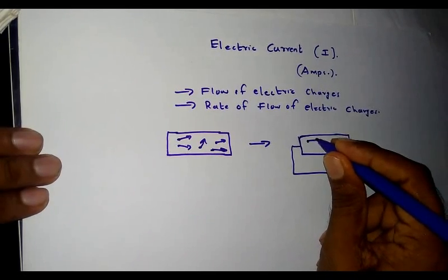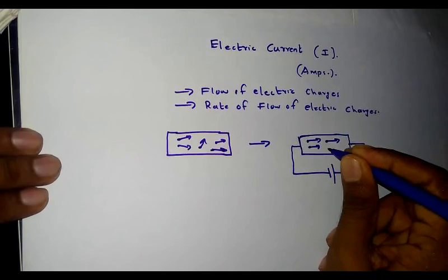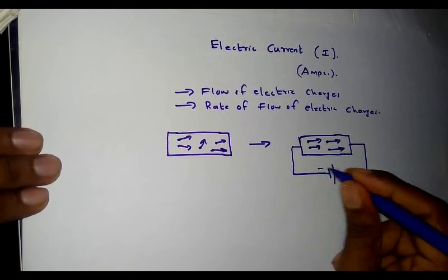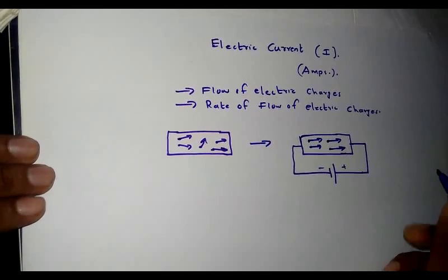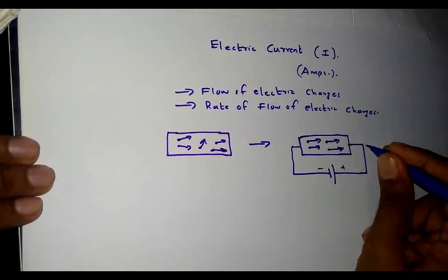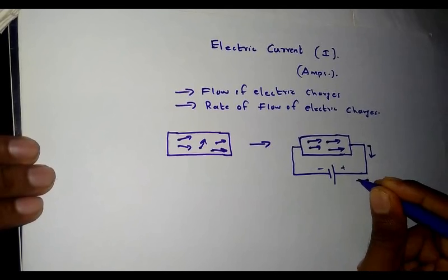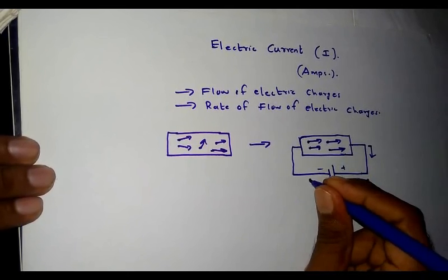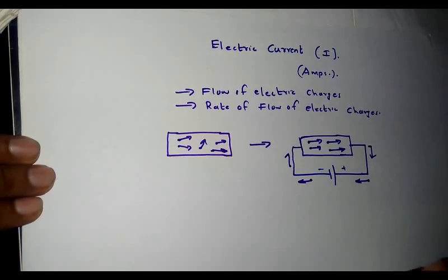The electrons will take a position as shown — they will move towards the positive terminal of the battery. This is the negative terminal and this is the positive terminal, so free electrons will move in this fashion towards the positive terminal of the battery.